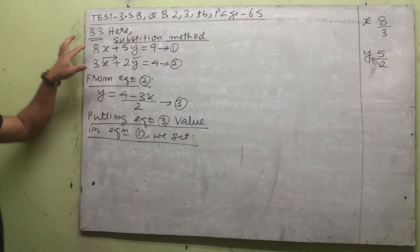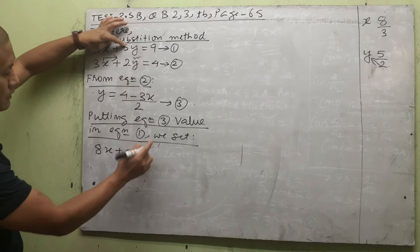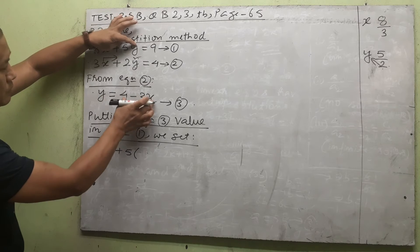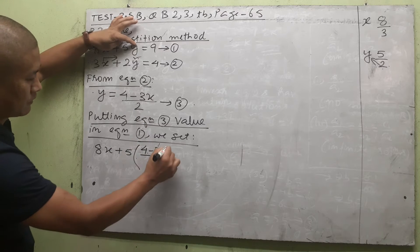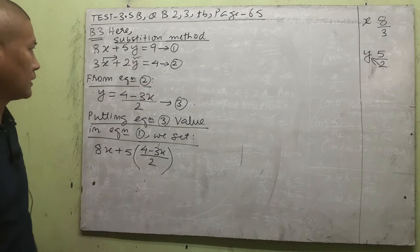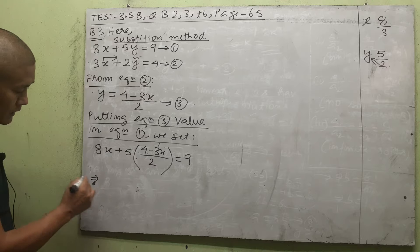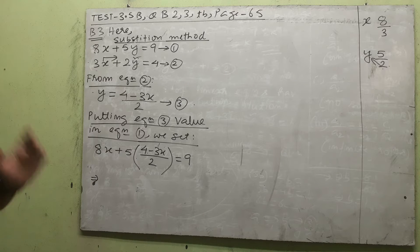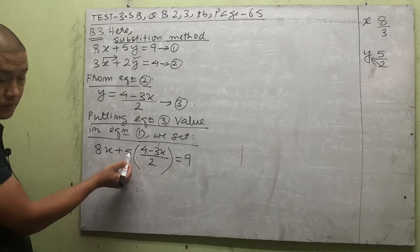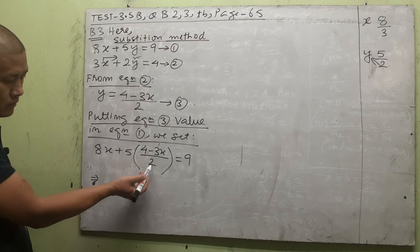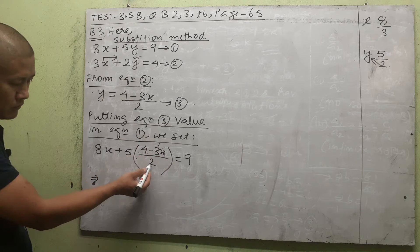Substituting into equation 1: 8x + 5y = 9, replacing y with (4 - 3x)/2 gives us 8x + 5 × [(4 - 3x)/2] = 9. The bracket indicates multiplication. Now, the 2 in the denominator is part of the whole fraction term, so 2 will not multiply the 5. Instead, we multiply 5 into both terms in the numerator of the fraction.